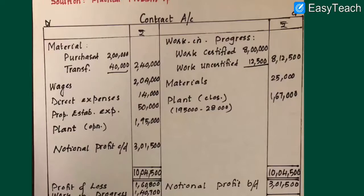We take the difference between income and expenses to get the profit. Because this is an incomplete contract, this profit is called notional profit. The notional profit is 3 lakh 1,500 rupees.